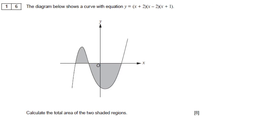The diagram below shows a curve with equation y equals (x plus 2)(x minus 2)(x plus 1). Calculate the total area of the three shaded regions.